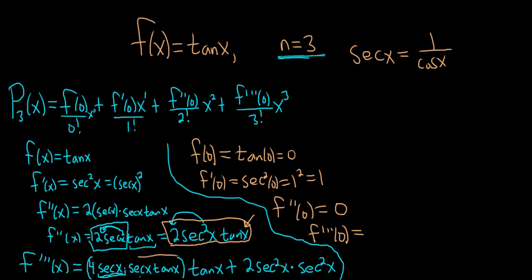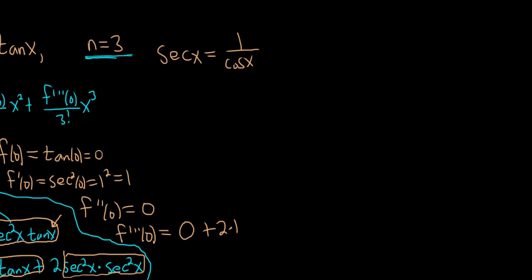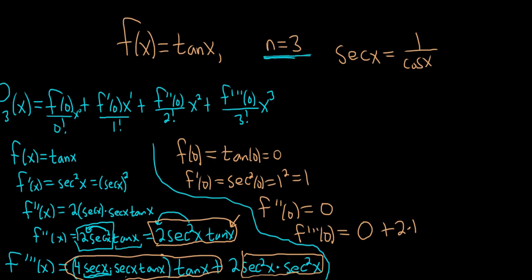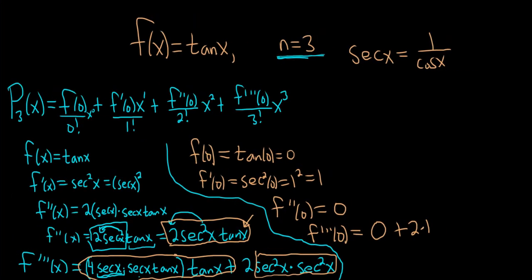For f'''(0), the first piece of the third derivative will completely vanish because it contains tangents and tangent of 0 is 0. The second piece is 2 secant squared(x) times secant squared(x) — all of those secants become 1 since secant(0) is 1 and tangent(0) is 0. So we just get 2.